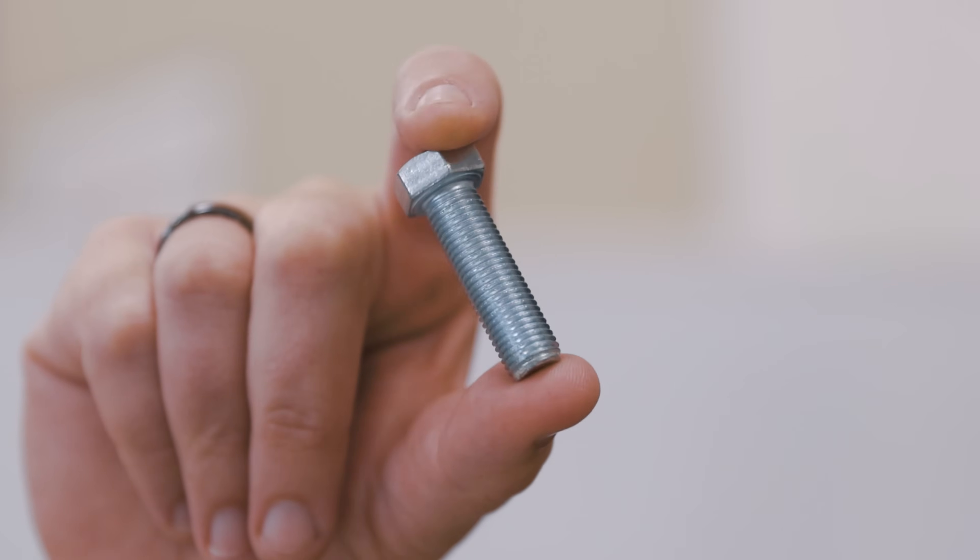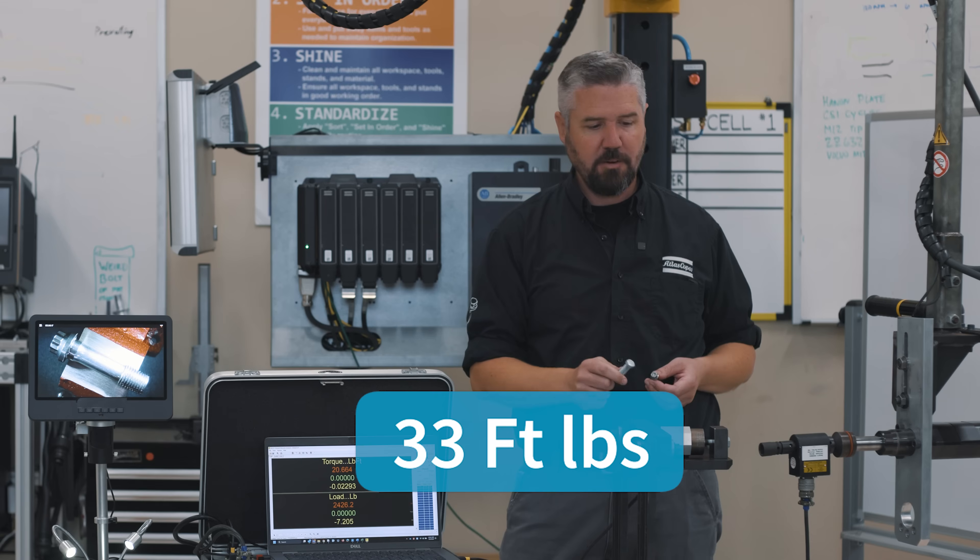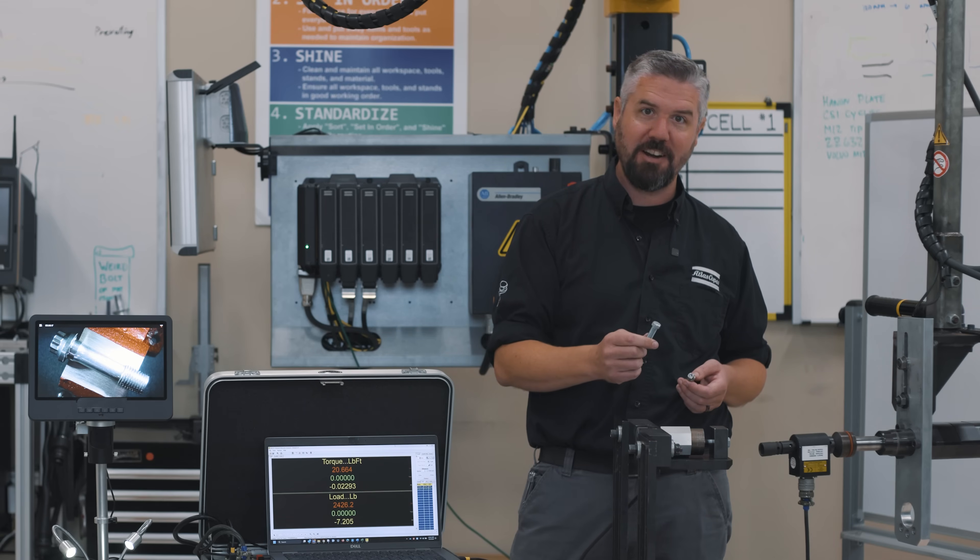This is a grade five fastener. We're going to take this to the spec of 33 foot pounds, see how much clamping force we generate, and then turn up the torque and break this thing with a tensile fracture and see how much clamping force it generates at its peak.